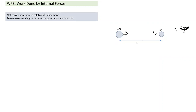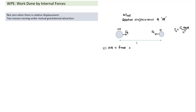Case 1: 4m is fixed, only mass m moves. It moves toward 4m due to mutual attraction. Distance reduces by dL. Work done = FL × dL, which is positive. Case 2: m is fixed, 4m moves toward m. Again, force and displacement are in the same direction, so work done = FL × dL, also positive.